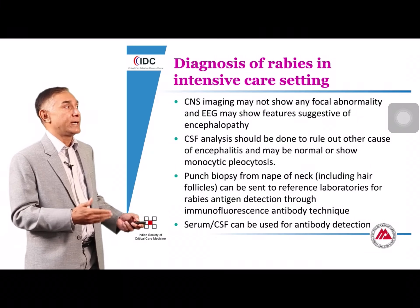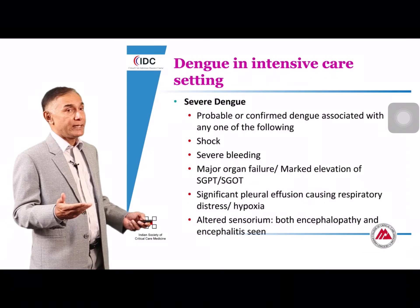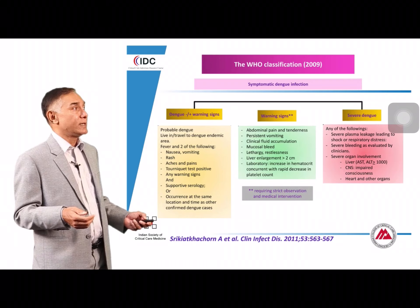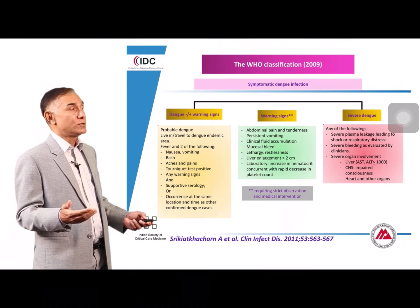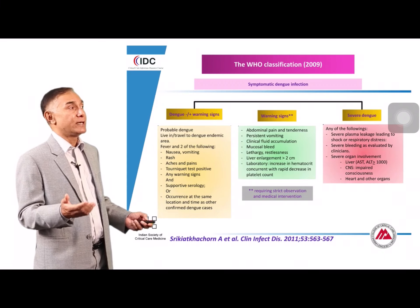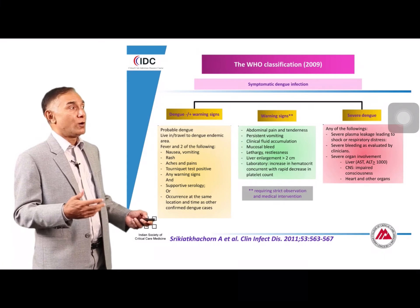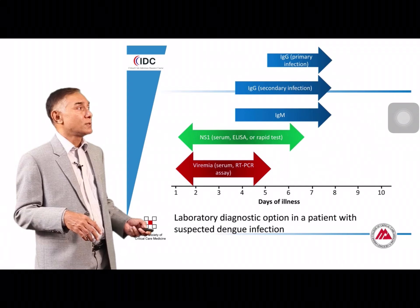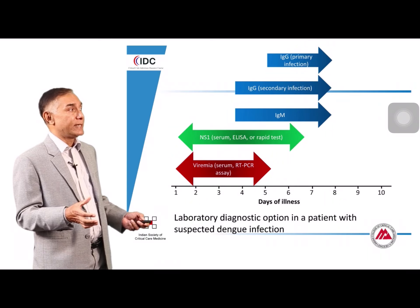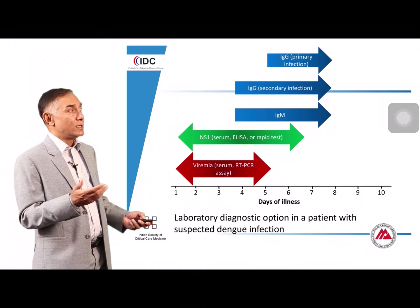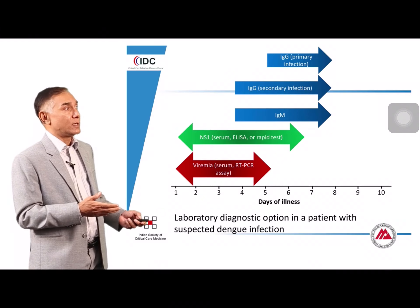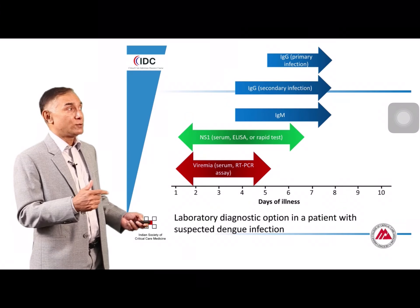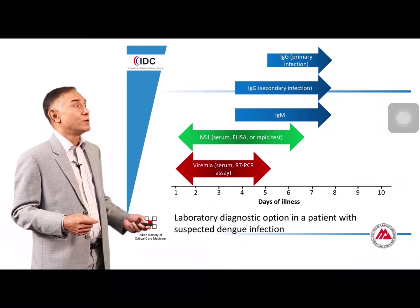Dengue is a common syndrome, particularly in younger patients. Per the WHO 2009 classification, in the ICU we typically see severe dengue associated with bleeding, shock syndrome, or severe organ involvement such as severe hepatitis or encephalopathy. Diagnostically, early in disease antigenemia and PCR are positive; IgM antibodies turn positive after approximately day five. It is important to interpret test results based on the time the sample is drawn.